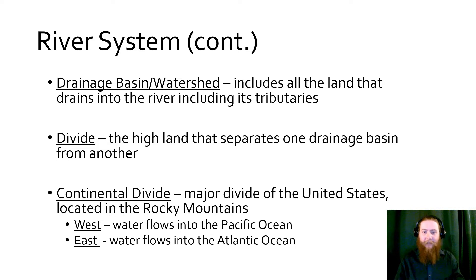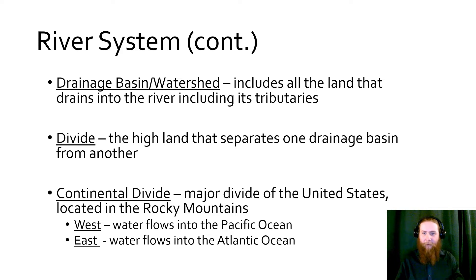There's a really big divide in the United States called the Continental Divide. It's the major one in the U.S., located in the Rocky Mountains on the western side. Any water that hits the western slopes of the Rocky Mountains will flow down until it reaches the Pacific Ocean, and any water that hits the eastern side of the Rocky Mountains will flow until it reaches the Atlantic.